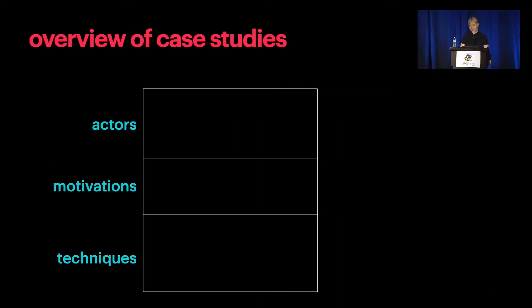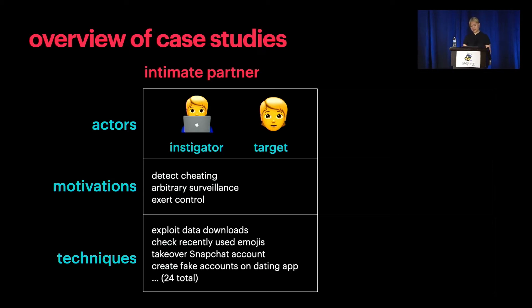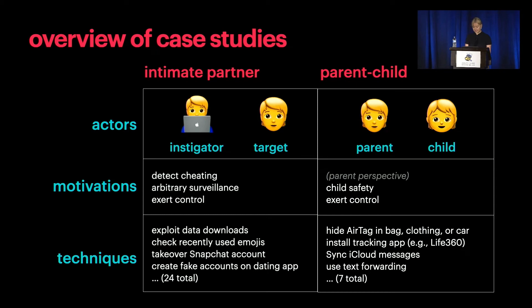So what do we find? Here is an overview of the actors, motivations, and techniques in our two cases. In the intimate partner context, we have the instigator and the target. The instigator's motivations broadly were to detect cheating, do arbitrary surveillance, or exert control on the target. We found a total of 24 techniques, including abusing data downloads, checking recently used emojis, and more. In the parent-child context, we have the parent and the child, with the child ranging from early school age to teenagers. The parent's motivations were broadly to ensure child safety or exert control. We found seven techniques, including hiding AirTags in their children's bags, installing tracking apps, and more.